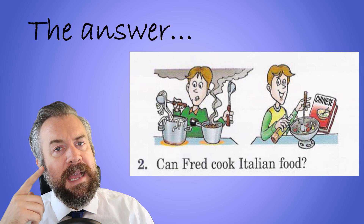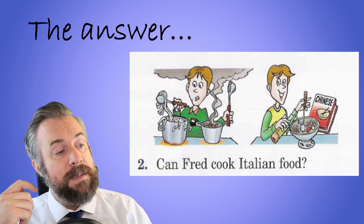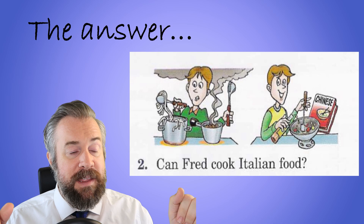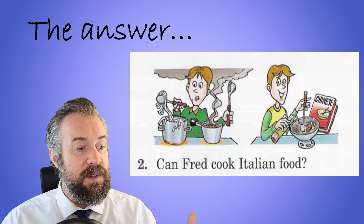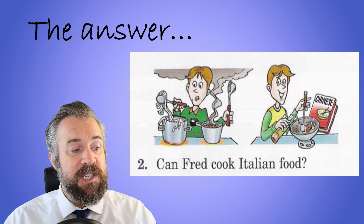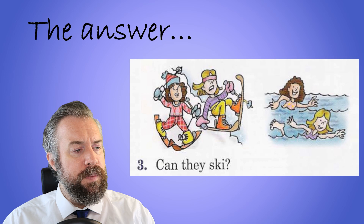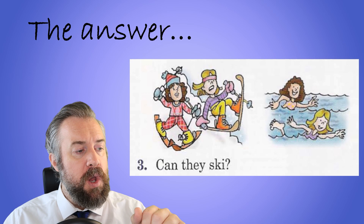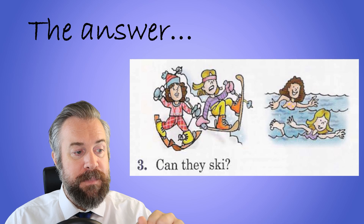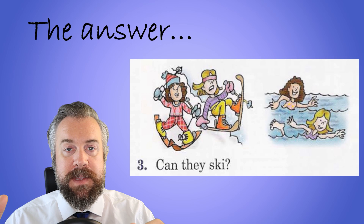Back to number two: Can Fred cook Italian food? Looking at the smoke, the pasta, the meatballs are burning — the answer is no, he cannot. But he can cook Chinese food; he looks comfortable and is using a Chinese cookbook. Number three: Can they ski? No, they can't, but they can swim — we can see them in the water looking very comfortable.